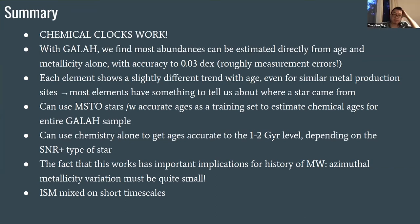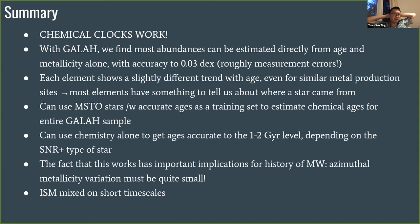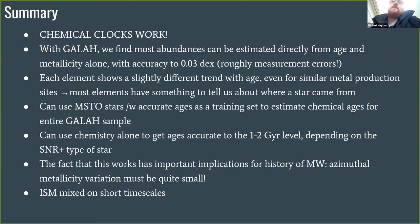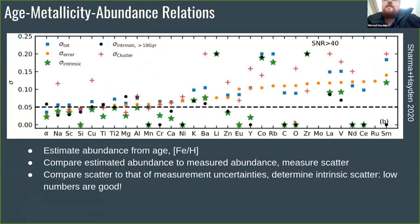A question about why yttrium is more important than barium — naively barium should be a purer S-process element. My suspicion is measurement precision. We measure yttrium a little bit better than barium, at least for the training sample. Looking back at the Sanjeev paper, the scatter in yttrium is mostly explained by age and metallicity, but the scatter in barium is a little larger, so we likely just measure yttrium more precisely.